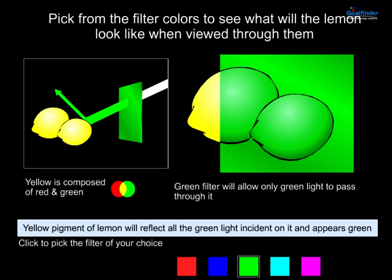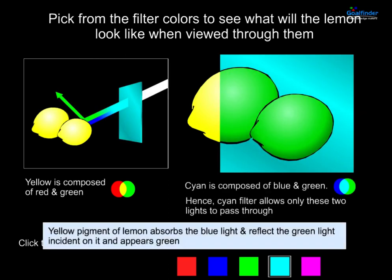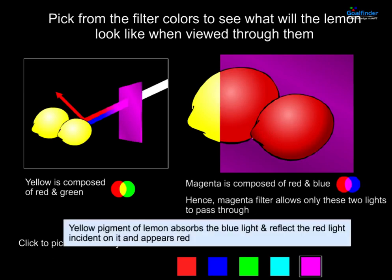The green filter will allow only green light to pass through it. The yellow pigment of the lemon will reflect all the green light incident on it and appears green. Cyan is composed of blue and green, hence the cyan filter allows only these two lights to pass through. The yellow pigment of the lemon absorbs the blue light and reflects the green light, and appears green. Magenta is composed of red and blue, hence the magenta filter allows only these two lights to pass through. The yellow pigment of the lemon absorbs the blue light and reflects the red light, and appears red.